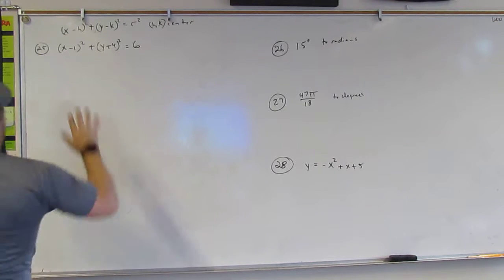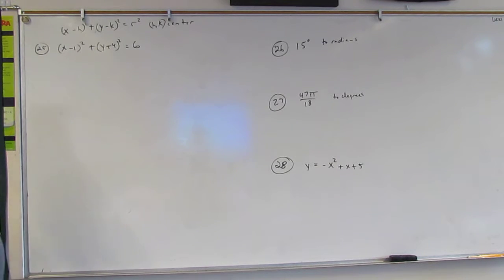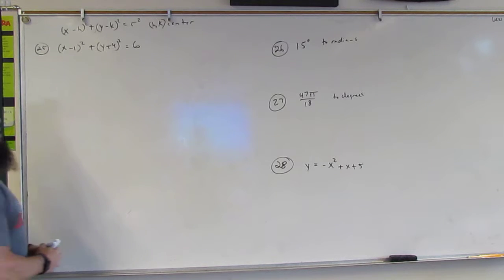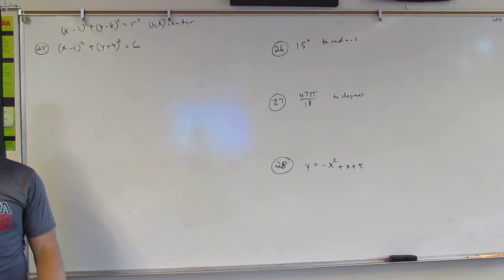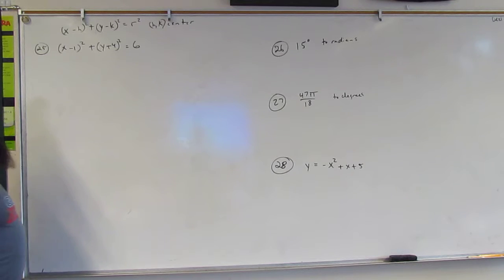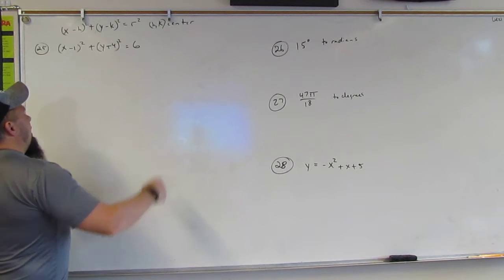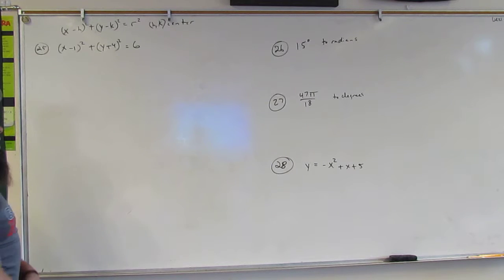First, circles. We didn't really cover circles, but they are on most SATs, ASVABs, ACTs, and possibly the SBAC. The whole key to circles — it looks a lot like the vertex formula. H and K are the center of the circle, and R is the radius.